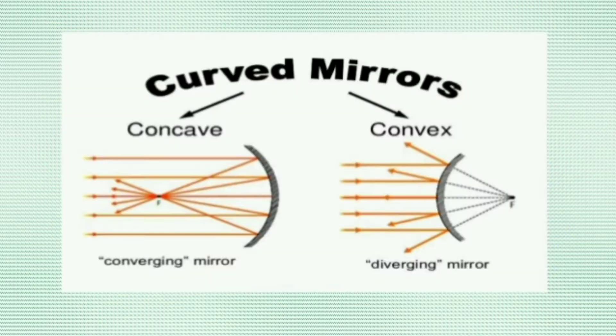This is the diagram of concave and convex mirror. A concave mirror is called a converging mirror and a convex mirror is called a diverging mirror.